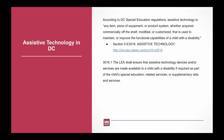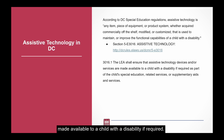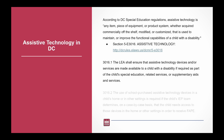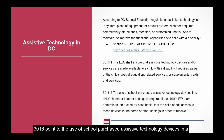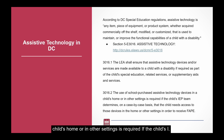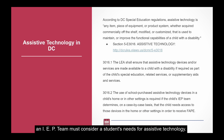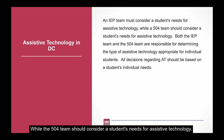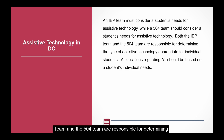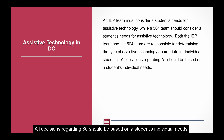Listed below are the subsections. 3016.1: The LEA shall ensure that assistive technology devices and/or services are made available to a child with a disability, if required as part of the child's special education, related services, or supplementary aids and services. 3016.2: The use of school-purchased assistive technology devices in a child's home or in other settings is required if the child's IEP team determines, on a case-by-case basis, that the child needs access to those devices in the home or other settings in order to receive FAPE. An IEP team must consider a student's needs for assistive technology, while a 504 team should consider a student's needs for assistive technology. Both teams are responsible for determining the type of assistive technology appropriate for individual students. All decisions regarding AT should be based on a student's individual needs.